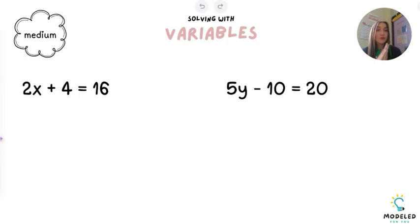As you can see, there are more numbers in this equation than in the easy video. What I'm working to do is the same thing as before: get the variable all by itself. First, I have to get rid of the numbers. Now, this number is attached to the variable, so I'm not going to work with that yet. I'm first going to start with my addition.